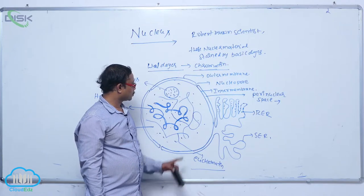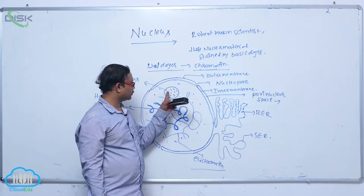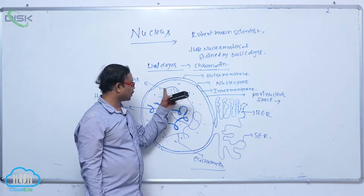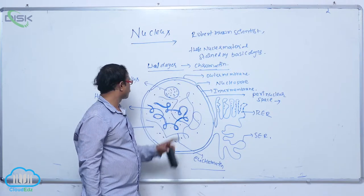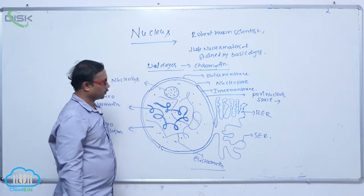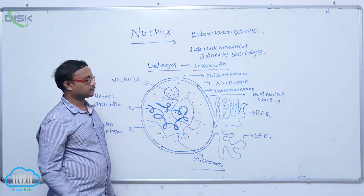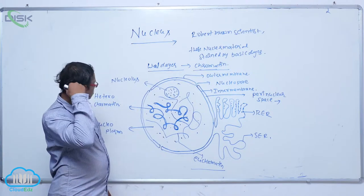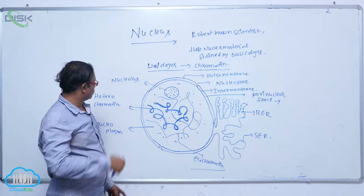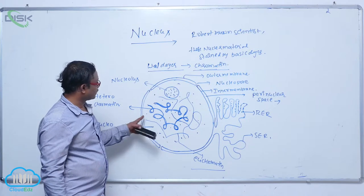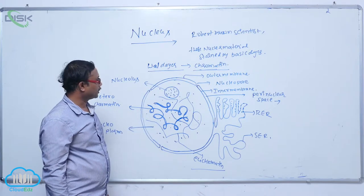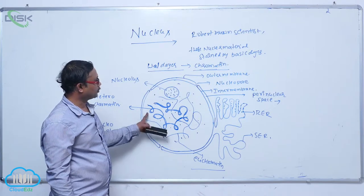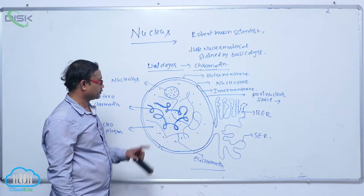Inside the nucleus, there is a small spherical-shaped structure called the nucleolus. Chromatin material is also present, along with the nucleoplasm.